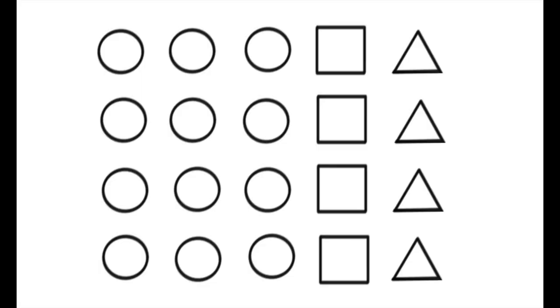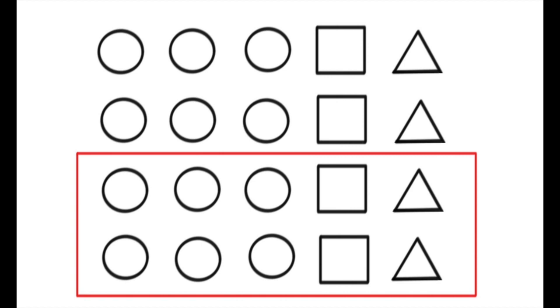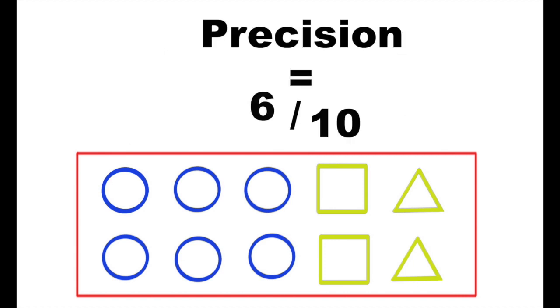Now I know that's probably really confusing, so let's simplify it using some visuals. Here we see we have 20 different objects and they are three different types of shapes: circles, squares, and triangles. So if we're trying to predict which shapes are circles and we choose this selection, we have six circles. For our precision, what we're looking at is the total number of circles that were actually chosen — which is six — out of the total number of objects which were chosen, that's 10. So for precision, we have six out of 10 in this predictive model.